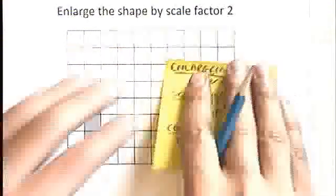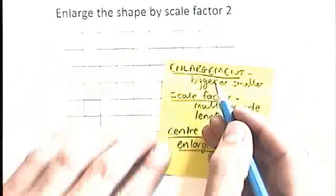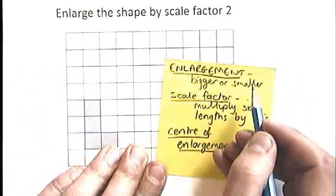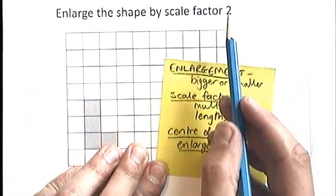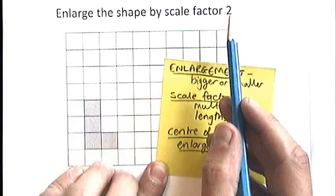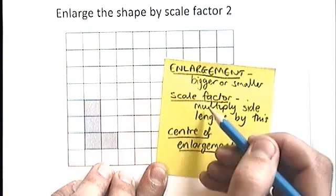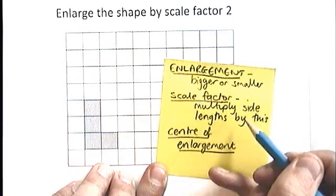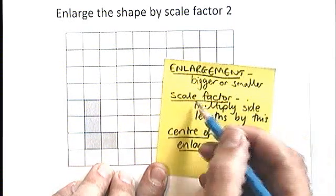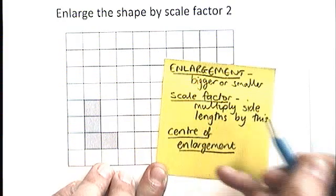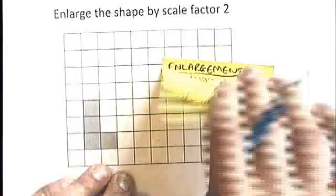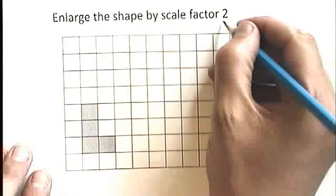A few things you need to remember. First of all, an enlargement can be made bigger or smaller. So if you had a fractional number here, this shape might get smaller. The scale factor is the number that you multiply the side lengths by. So I've written scale factor. Multiply your side lengths by this number.